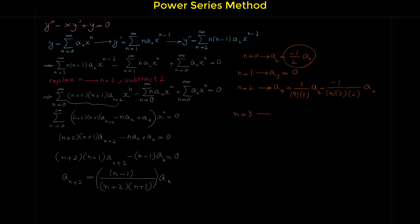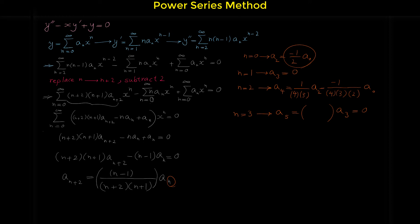Plugging in n equals three: a₅ equals some coefficient times a₃. Since a₃ equals zero, a₅ also equals zero. Similarly, a₇, a₉, and all coefficients with odd index are zero, because each one relates to the previous odd-indexed coefficient. So we only need to find the even coefficients.